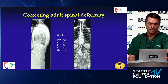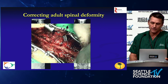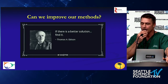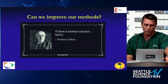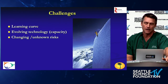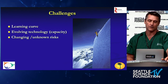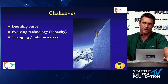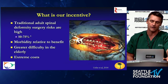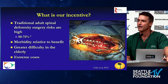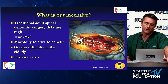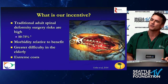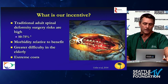If you look at adult deformity, this is obviously where we've been. Just like degenerative spine, there's been a consideration to find better solutions where we've seen a lot of misery and pain, difficulties and complications. But with MIS comes significant learning curves, constantly evolving technologies, and with that, changing and somewhat unknown risks. Traditional adult deformity surgery risks are tremendous — 50 to 75 percent. The morbidity relative to benefit remains in question from a societal and economic perspective, and there's greater difficulty performing these surgeries in the elderly or infirm, as well as extreme costs.